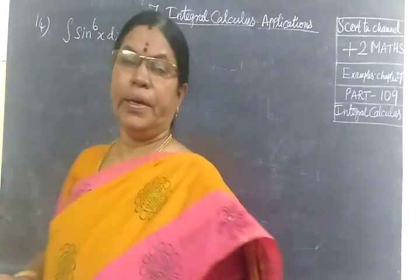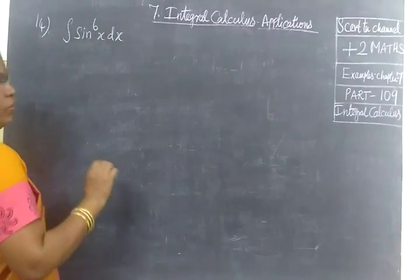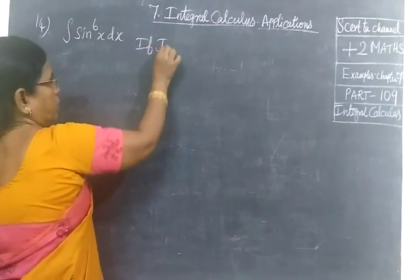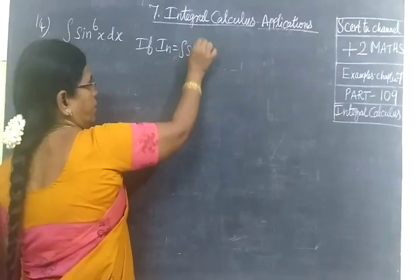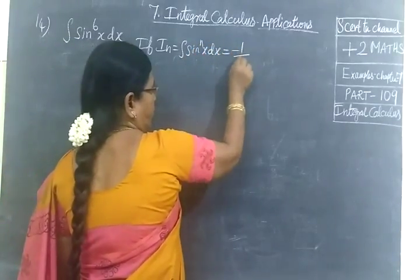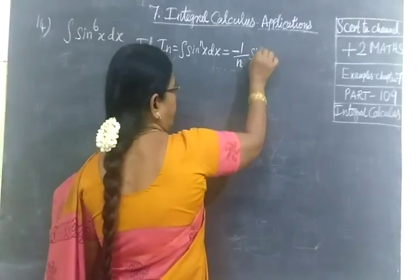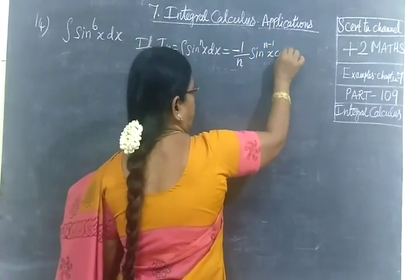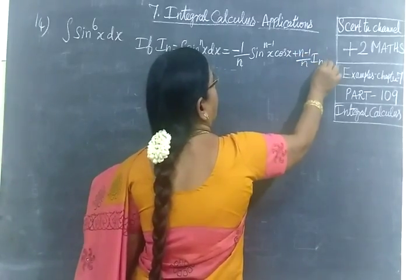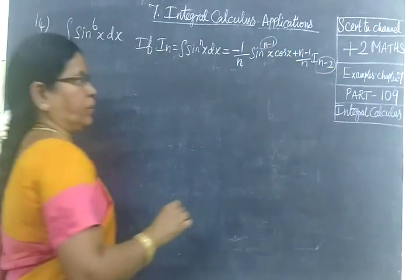Now we will see path 1 of 9: integral of sin power 6x. For this we are using the reduction formula. If I_n equals the integral of sin power n x dx, the formula gives a recursive relation involving I_(n-2).